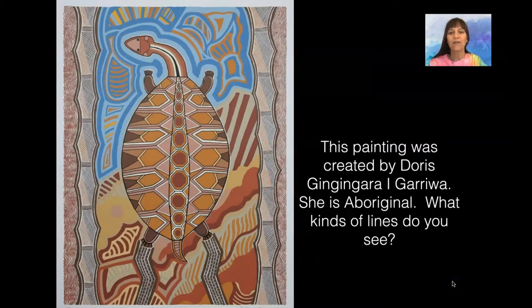This painting was created by Doris Jinjinguere Gariwe. She is Aboriginal. What kind of lines do you see? Can you find vertical lines? Zigzag lines? Diagonal lines? What's in there?